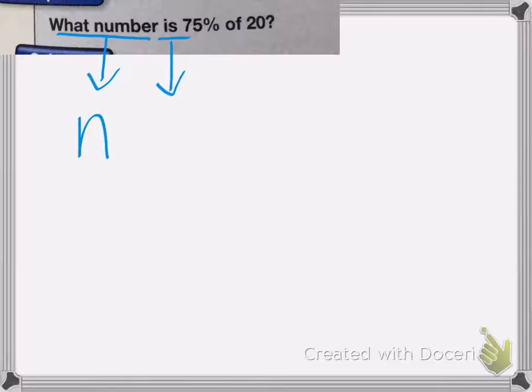Okay, is, is our equal sign. Is means equals. 75%, well, you learned in the last problem that 75% is the same as three-fourths, and it's actually simpler to multiply to work with fractions and decimals than a percent.